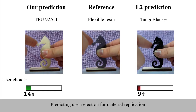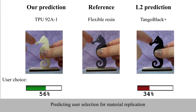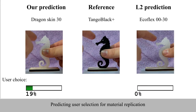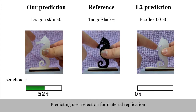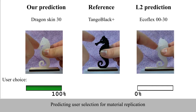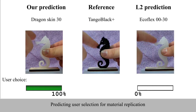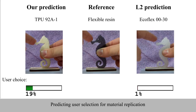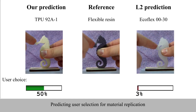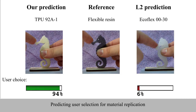In the first example, our prediction agreed with 62% of votes. During the second trial, our participants voted for the replica selected by our model. In the last example, 94% of participants voted for our reproduction.